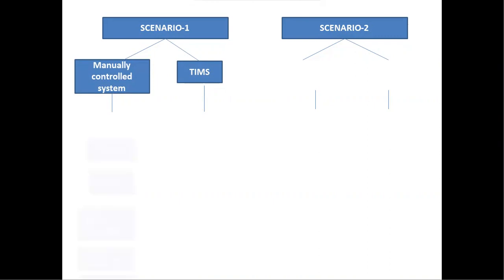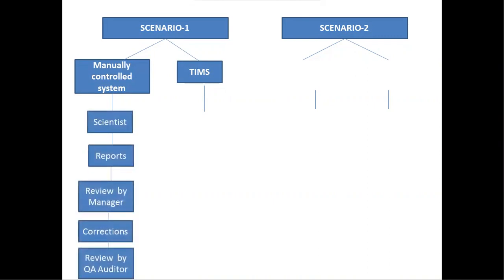In a manually controlled system, the scientist would prepare reports by typing the text and often through multiple cut-and-paste procedures to include pictures or images. Then the scientist would make a draft report, which would be sent to the manager for review. The manager would make necessary corrections and send the document back to the scientist, who would then make a new report for final approval by the quality assurance auditor.